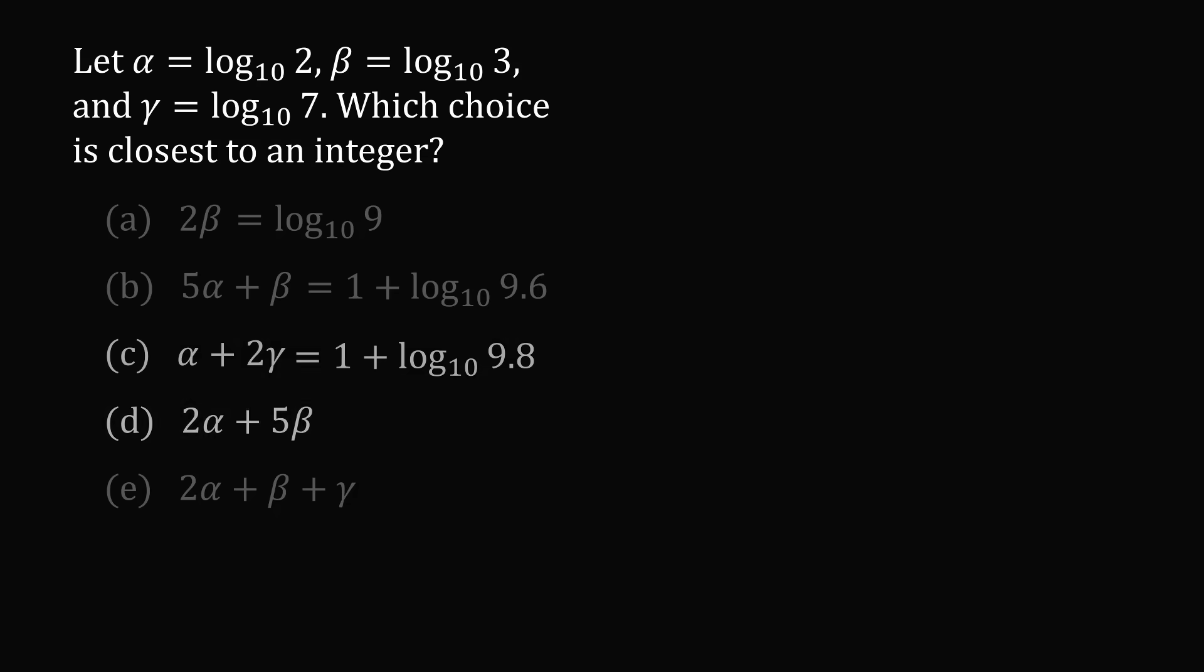We'll go ahead to answer choice D. We substitute in for alpha and beta. As before, we use the rules of logarithms. So let's bring up these coefficients to be exponents. And now let's take the sum and turn it into a product of the arguments. We now have 2 squared multiplied by 3 to the power of 5, which I don't know offhand.